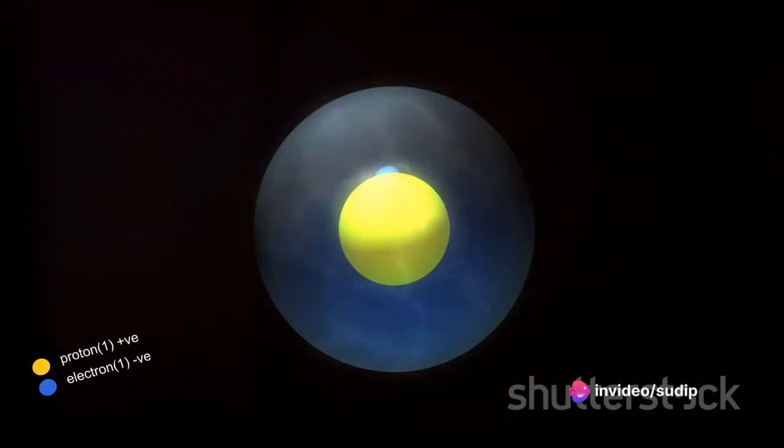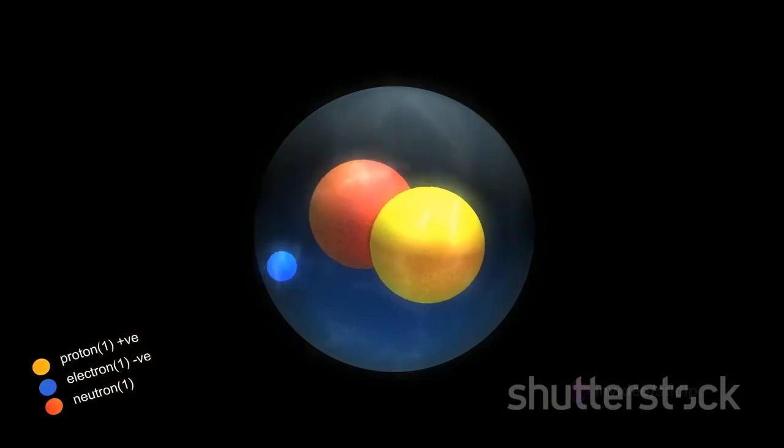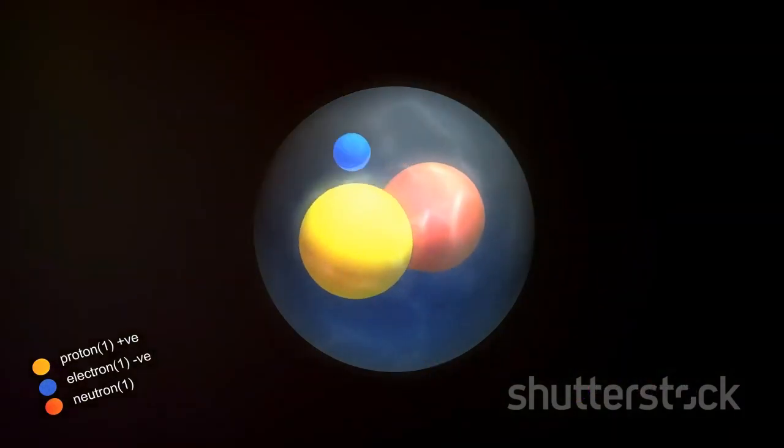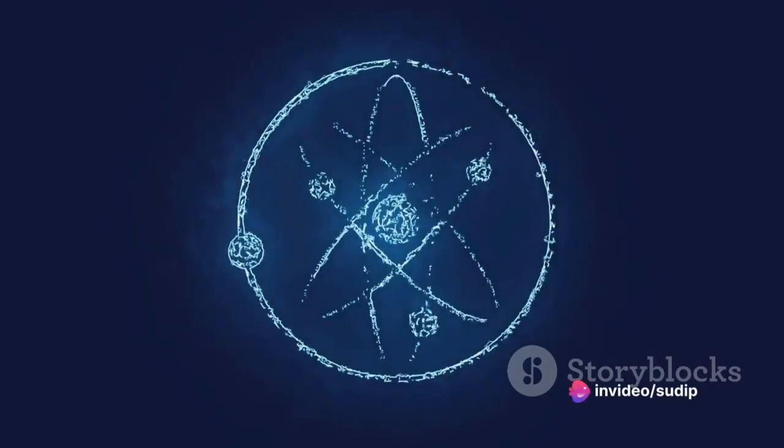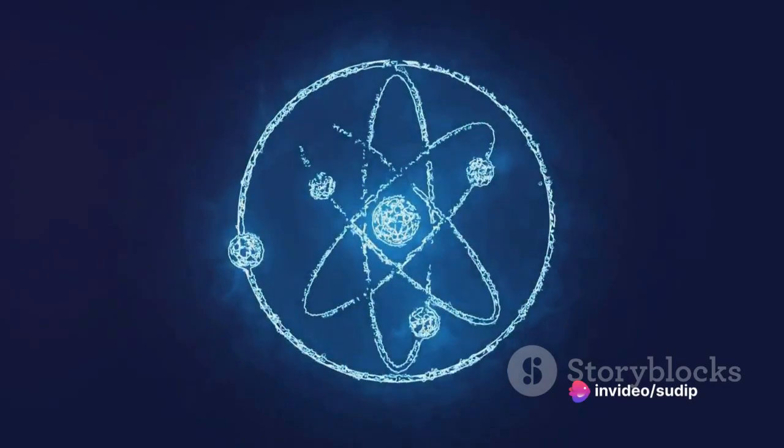But there's a catch. The strong nuclear force only works over very short distances, about the size of a nucleus. Outside this range it essentially becomes irrelevant. That's why you don't see protons and neutrons sticking together outside the nucleus.